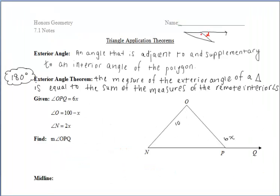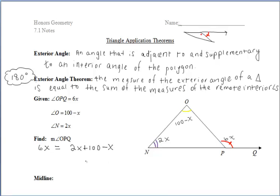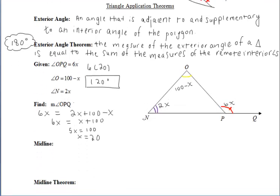For our first example, let's label our diagram with the given information. What we want to find is the measure of angle OPQ, which is our exterior angle. Using the theorem we just discussed, we recognize that this is an exterior angle, and the yellow and purple angles are remote interior angles. So the measure of the exterior angle, represented by 6x, equals the sum of the remote interior angles: 2x plus 100 minus x. We get that x equals 20, and substituting back in, the measure of angle OPQ is 120 degrees.